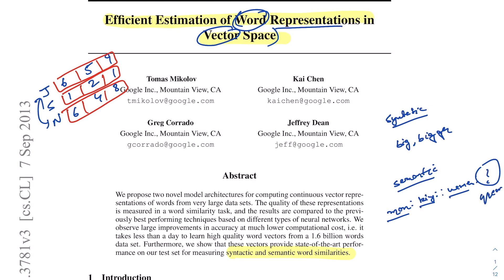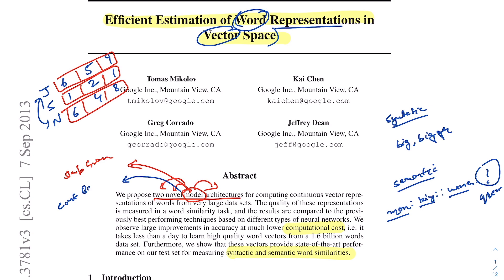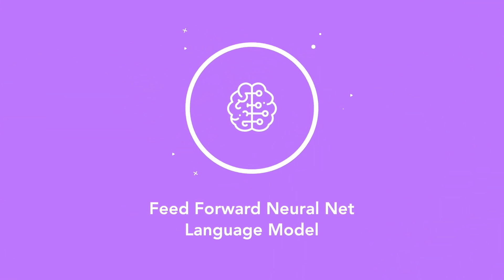The idea of representing words as vectors was not new — previously, word embeddings were produced as a byproduct of language models trained to predict the next word in a sentence. The key difference word2vec introduced was that its explicit goal was to generate word embeddings, improving computational efficiency. The authors introduced two novel architectures: skip-gram, which uses the input word's representation to predict surrounding words, and continuous bag of words (CBOW), which uses surrounding words to predict the center word.